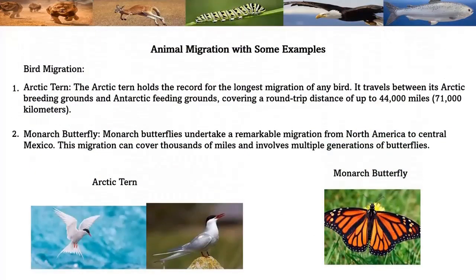Examples of migration — bird migration: the Arctic tern holds the record for the longest migration of any bird, traveling between its Arctic breeding grounds and Antarctic wintering grounds. Monarch butterflies undertake a remarkable migration from North America to central Mexico. This migration can cover over thousands of miles and involves multiple generations of butterflies.